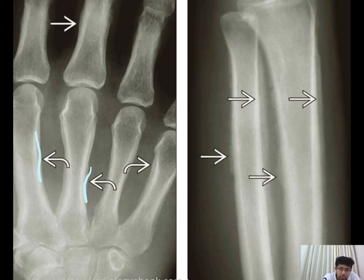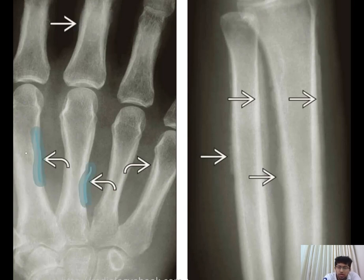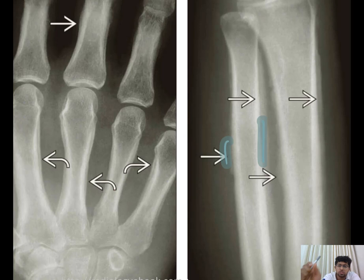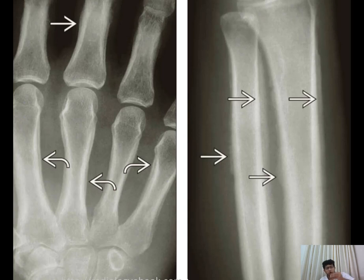Subtle periosteal reaction can also be seen in the phalanges. In another image, we can see involvement of the radius and ulna, both showing periosteal reaction. This kind of diffuse, symmetrical periosteal reaction — which can be linear, floppy, or exuberant — is seen in hypertrophic osteoarthropathy.